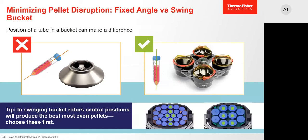Another tip: the choice of tube slot location also makes a difference. Different tube slots make different angles to the rotation axis. The central tubes are almost perfectly in line with the rotation axis, while neighboring tubes receive centrifugal force at a small angle, resulting in less even pelleting. To get the most even pellet, use the central slots — especially important when running a small number of tubes or when yield is very low.